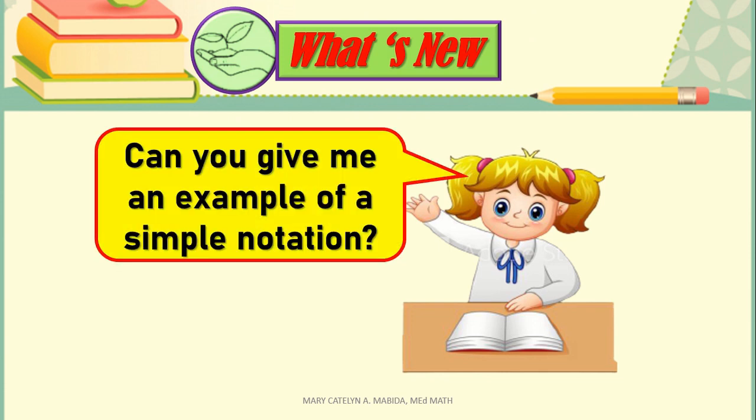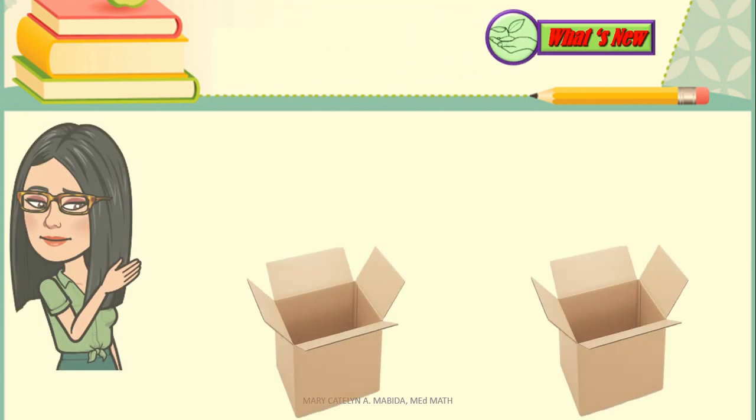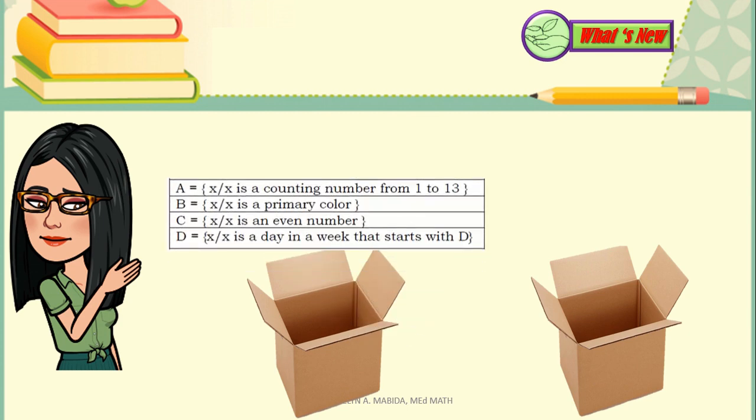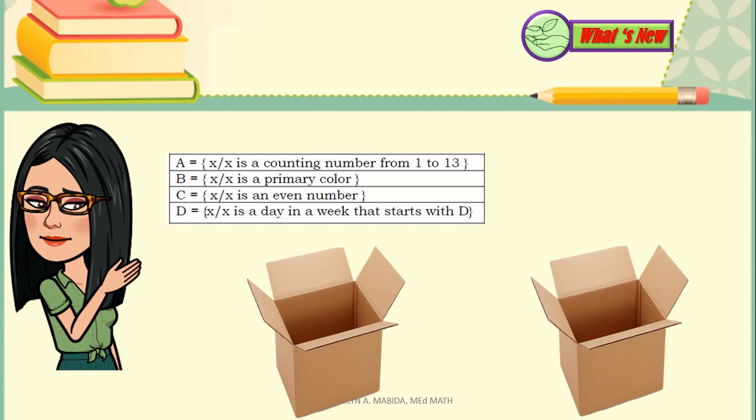What's new? Can you give me an example of a simple notation? In the two boxes are sets written in set notation. Can you guess what set notation they are written in? Let's have the first box. Set A, where X such that X is a counting number from 1 to 13. Set B, where X such that X is a primary color. Set C, where X such that X is an even number. And set D, where X such that X is a day in a week that starts with D.